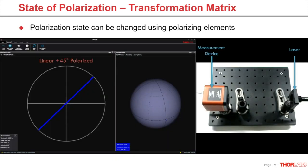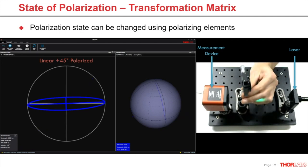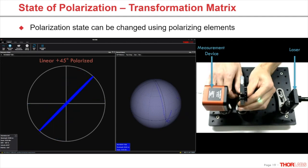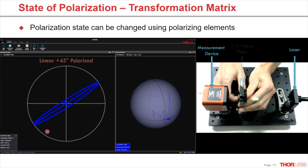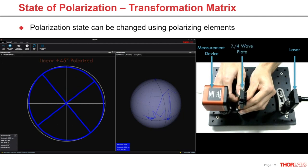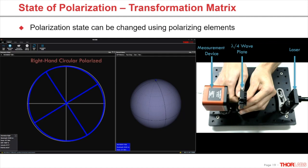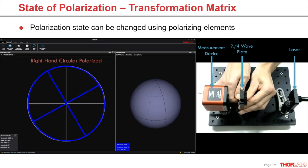Here we can observe the experiment from the previous page in a video demonstration. The initial state is linear, and after aligning the retarder, the polarization turns to circular.